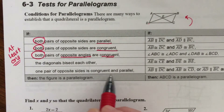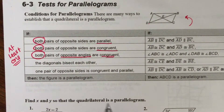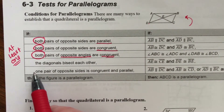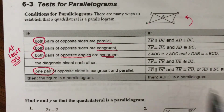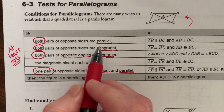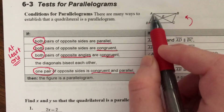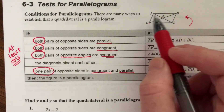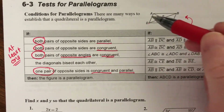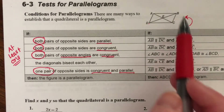Fifth: one pair of opposite sides is both congruent and parallel. Up above, both pairs of opposite sides could just be parallel, or both pairs could just be congruent, and we needed both pairs. But here, one pair can be both things — congruent and parallel. So either both pairs of opposite sides are congruent, both pairs are parallel, or just one pair of opposite sides is both congruent and parallel. That's enough to know the entire shape is a parallelogram.